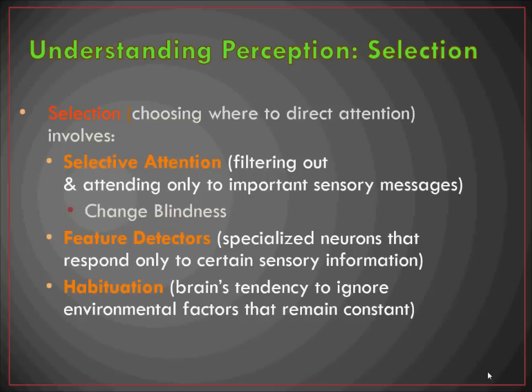Feature detectors are another piece of the selection portion of perception. We basically have specialized neurons in our brain that respond only to certain sensory information — neurons that process visual stimuli, neurons that process auditory stimuli, and so on. We only have so much capacity for our brain to process information, so what it's processing at any given time depends on what neurons are being fired and what kind of stimuli is coming in.